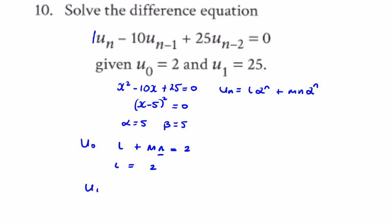For u_1, we have α·L + α·1·m = u_1 = 25, which gives 5·2 + 5·m = 25.